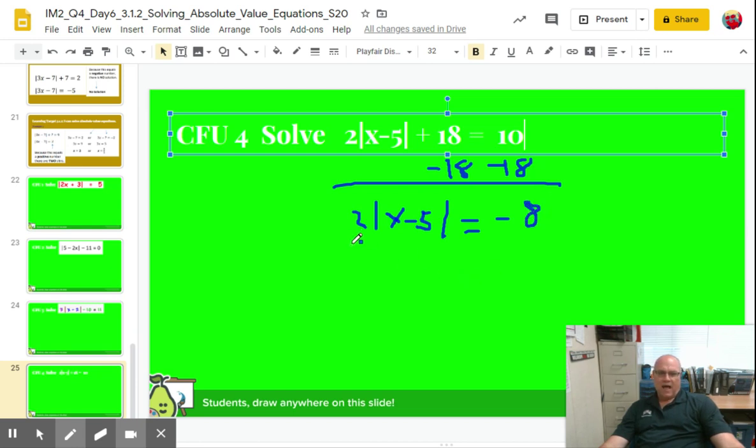All right. Now you want to get rid of the two. It's tied by multiplication. So you divide both sides by two. So when we isolate, we get X minus five, absolute value of X minus five equals negative four.